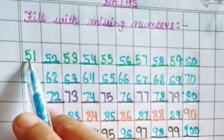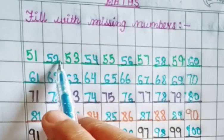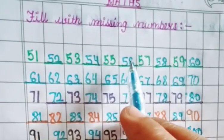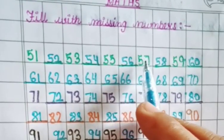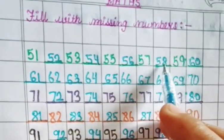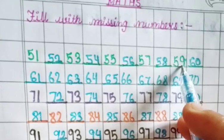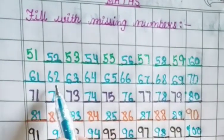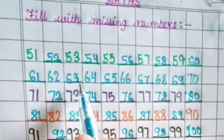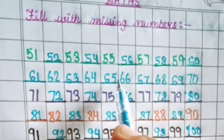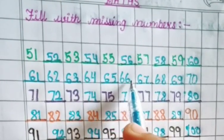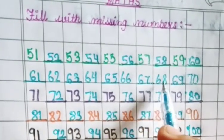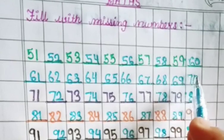51, 52, 53, 54, 55, 56, 57, 58, 59, 60. 61, 62, 63, 64, 65, 66, 67, 68, 69, 70.